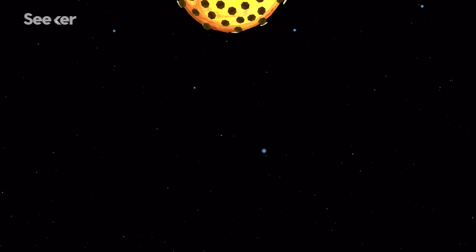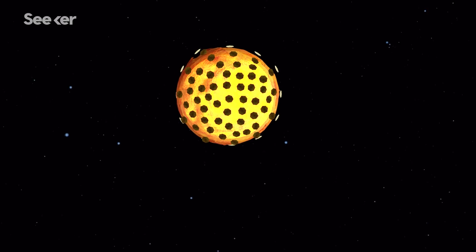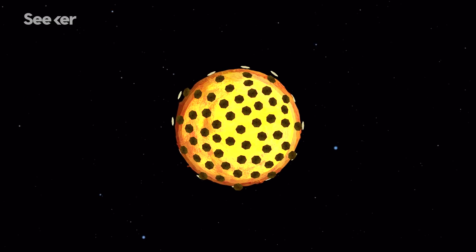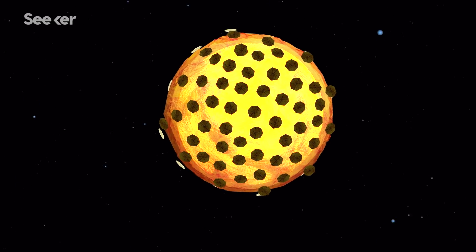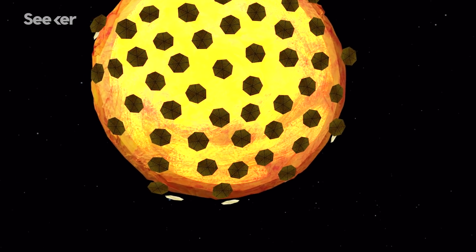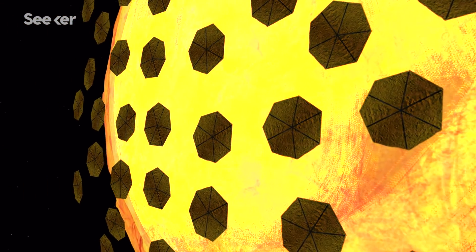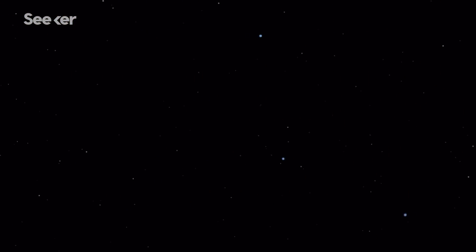Instead, some astro-engineers believe a Dyson swarm is the most practical design for our solar system. This concept would require the construction of an army of advanced solar panels which would orbit the Sun, capturing its light from all directions. The solar panels would collect the Sun's radiation and continuously transmit the energy wirelessly back to Earth.